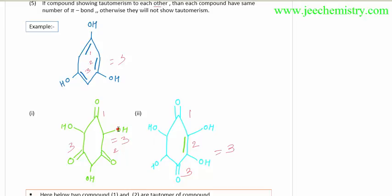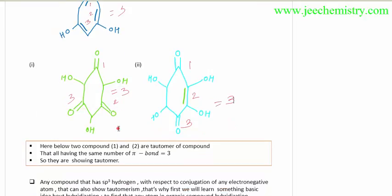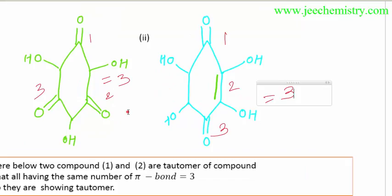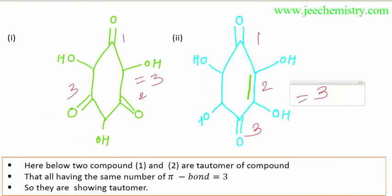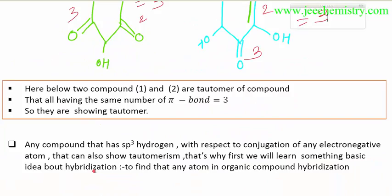If the number of pi bonds changes, they cannot show tautomerism to each other. The two compounds below, one and two, are tautomers of a compound. They all have the same number of pi bonds equal to three, so they are showing tautomerism.